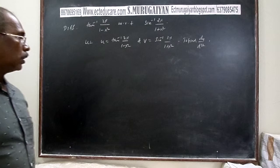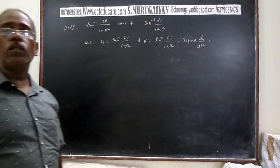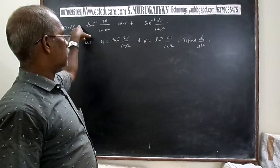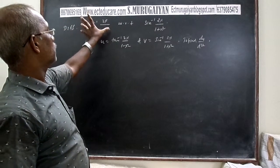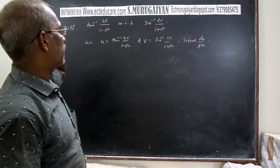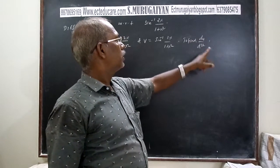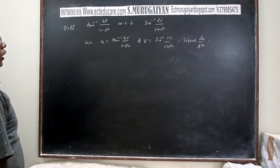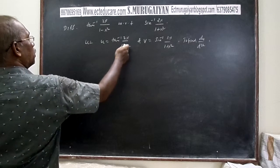This is the derivative of the first function with respect to the second function. u is the dependent variable and v is the independent variable. To differentiate u = tan⁻¹(2x/(1 - x²)), we take x = tan θ.